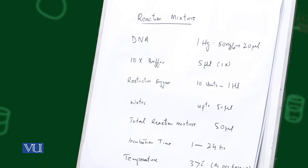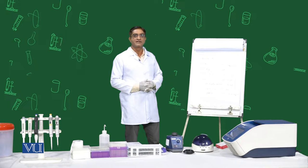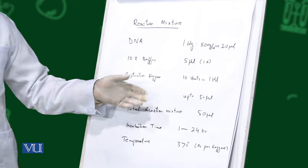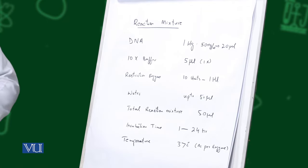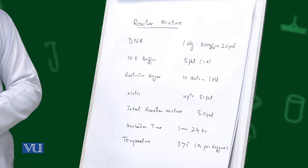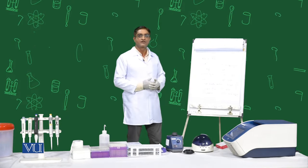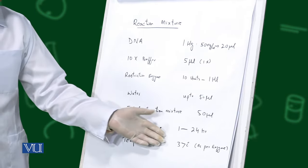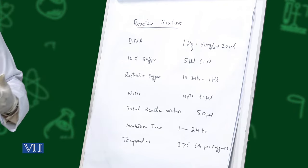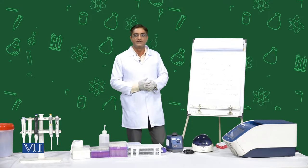After preparing the mixture, we will put it into incubation. The incubation time and temperature vary for different enzymes, normally ranging from 1 hour to 24 hours. We are using EcoR1, so we will incubate for 1 hour at 37 degrees centigrade. If the required temperature is different, it will be mentioned on the restriction enzyme.